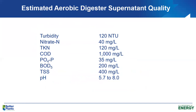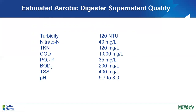Supernatant quality from an aerobic digester is generally better than from an anaerobic digester. Typical estimated values: approximately 40 mg/L nitrate-nitrogen, 120 mg/L TKN, 500–1,000 mg/L COD, 35 mg/L orthophosphorus, 100–200 mg/L BOD5, 300–400 mg/L suspended solids, and pH of 5.7–8.0. These values can vary, but this is typically what to expect. This waste stream is sent back to the head of the activated sludge process to be retreated.